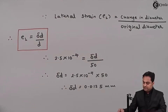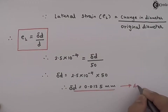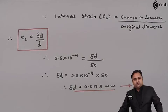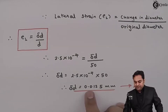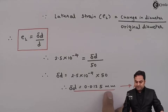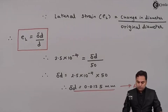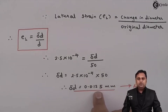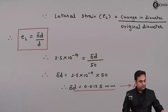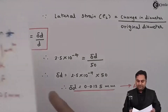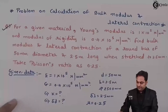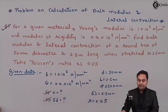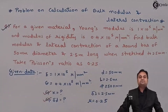So when the round bar is stretched, the change in diameter is 0.0125 mm, meaning the diameter is reduced by this value. The original diameter was 50 mm and it reduces by 0.0125 mm. In this video we have seen how to calculate bulk modulus and change in diameter with the given data.